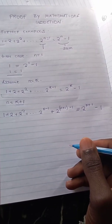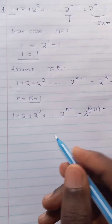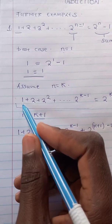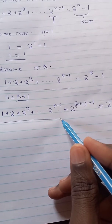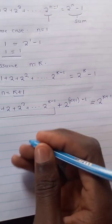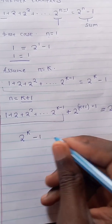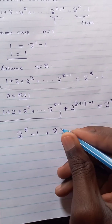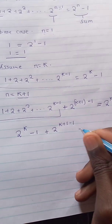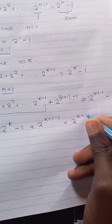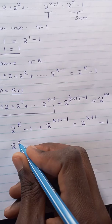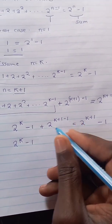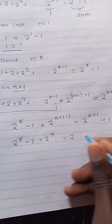To make our proving easier, we know from the inductive hypothesis that the sum up to two to the k minus one is equivalent to two to the k minus one. So we substitute that part, excluding the new term, giving us two to the k minus one plus the new term two to the k plus one minus one, equal to two to the k plus one minus one. The minus ones cancel to zero, leaving two to the k plus two to the k, equal to two to the k plus one minus one.